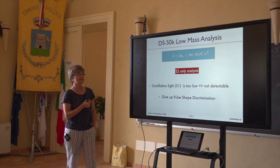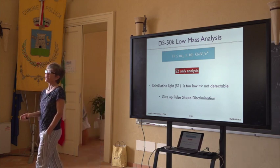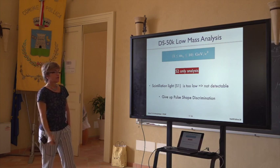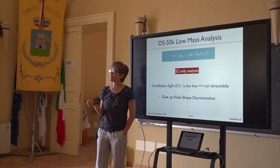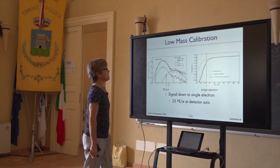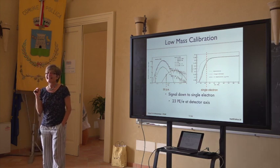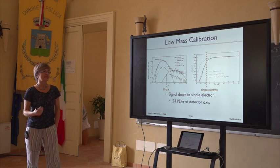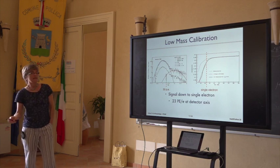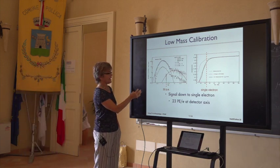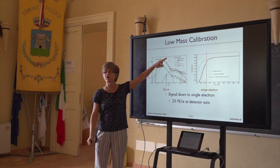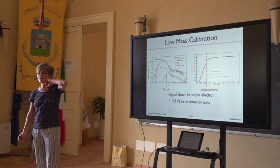We decided to try this analysis with DarkSide-50. At this low energy level, the prompt signal S1 is too low to really use, so it has to be an S2-only analysis — an ionization signal analysis using only the light from the gas pocket. In this sense, the analysis has to give up the strong feature of argon, which is the pulse shape discrimination. This plot shows data with the number-of-electrons distribution when the getter is on or off. The getter is what cleans the liquid argon.